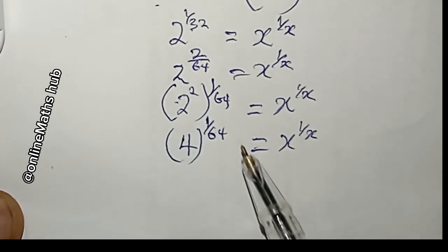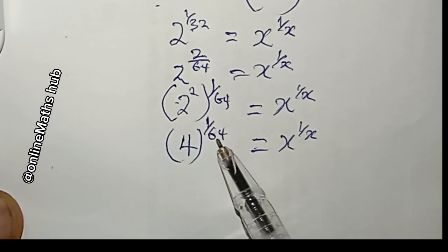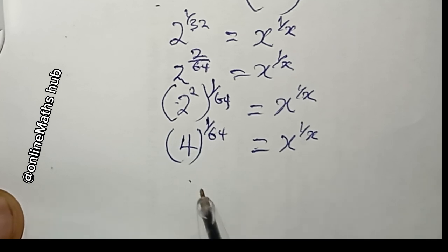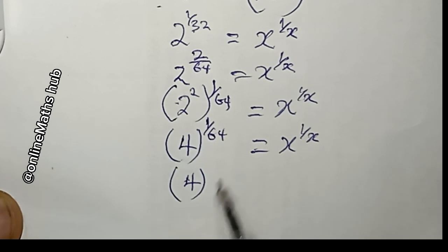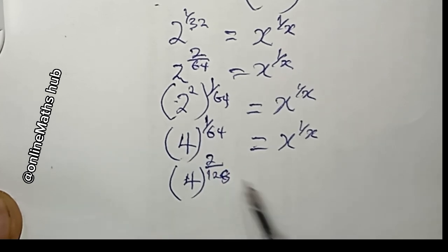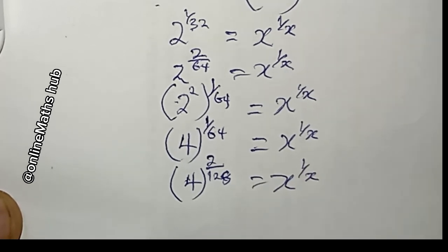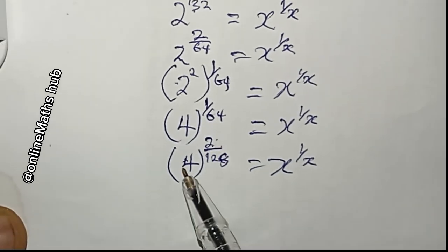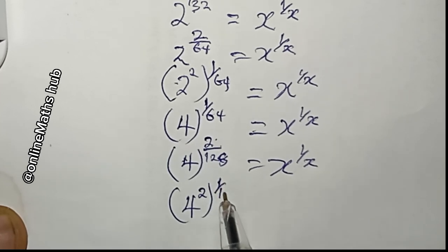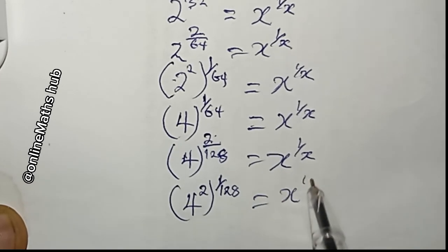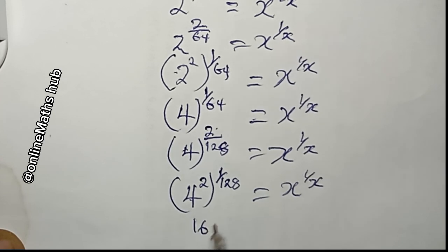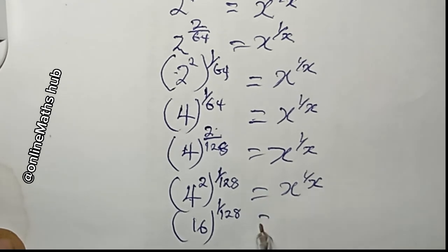I'll repeat the same process, multiplying numerator and denominator by 2 again to get another equivalent fraction. This gives 4 to the power 2 over 128, which equals x to the power 1 over x. Pulling the 2 inside the brackets: 4 squared to the power 1 over 128, and since 4 squared is 16, we have 16 to the power 1 over 128 equals x to the power 1 over x.